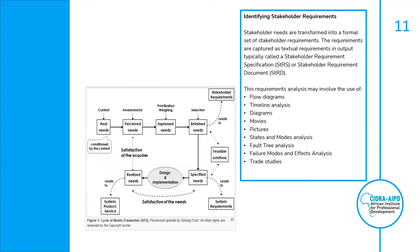Identifying Stakeholders' Requirements. Stakeholder needs are transformed into a formal set of stakeholders' requirements. The requirements are captured as textual requirements in outputs, typically called a Stakeholder Requirement Specification (STRS) or Stakeholder Requirement Document (STRD).